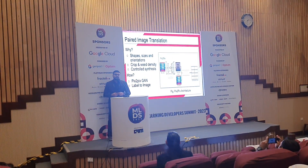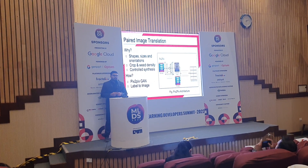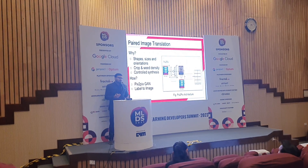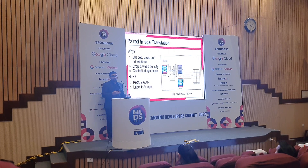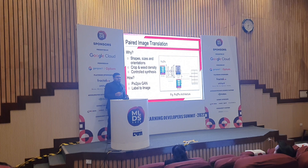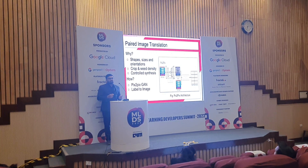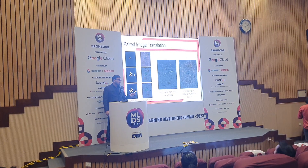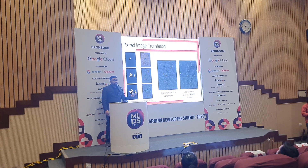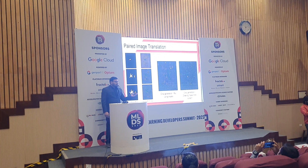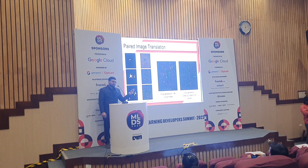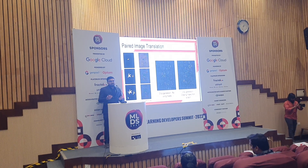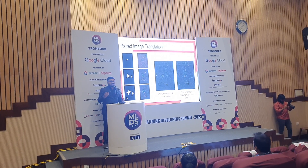We used Pix2PixGAN for paired image translation. Pix2PixGAN is an image-to-image translation GAN that uses a patch discriminator and a U-Net generator to learn the translation from source domain to target domain. For training, we used binary masks in the source domain and corresponding RGB images in the target domain. Once training was complete, just by drawing masks we were able to generate images of different shapes, sizes, orientations and densities. The first GIF shows crop generation by reusing existing masks, and the second shows crop generation from scratch.